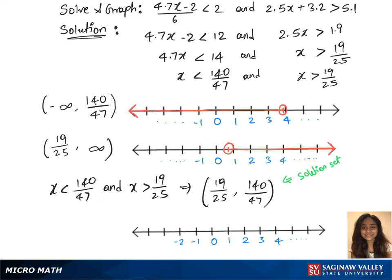This is our final graph. Look for 19 over 25 on the graph and mark it, and the other fraction 140 over 47, mark that. Join those two points. This is our final graph for the given question.